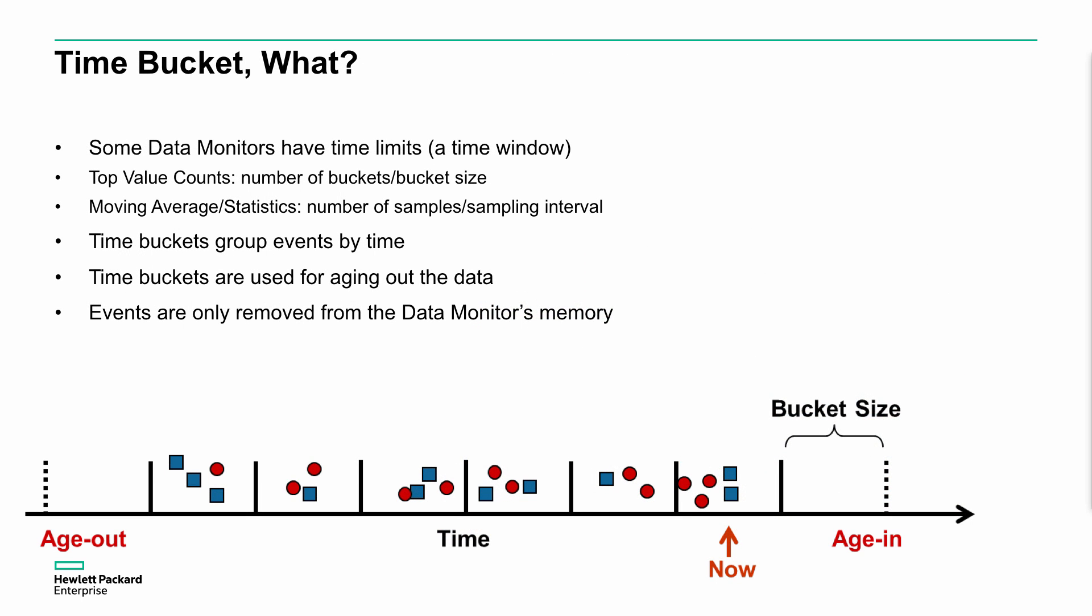But we need to understand a time bucket. What is a time bucket? It's a window that defines the time period we're trying to use to calculate these statistics. A data monitor allows us to do statistical calculations, specifically moving averages, statistics, calculations, sampling. What we use is a bucket mechanism. A bucket defines a time period and we group those events by that time period and we can do a calculation. Those buckets are used for aging out the data. Once we get to the end of the time period we're interested in, it'll dispose of those buckets accordingly.